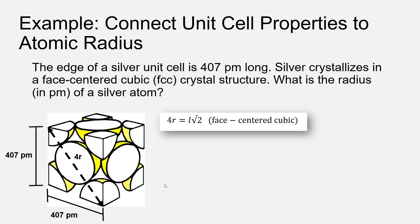If we solve this equation for the atomic radius, we find that the atomic radius r is equal to the edge length L times the square root of two divided by four, or r = L√2/4.